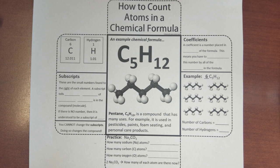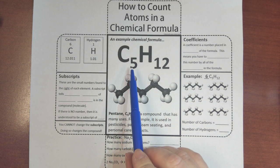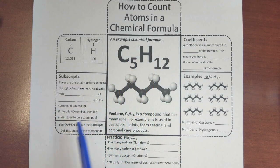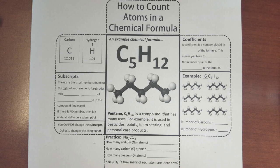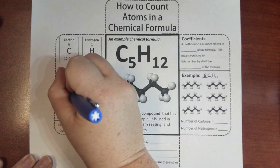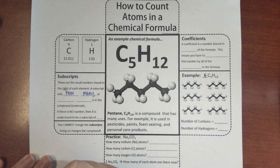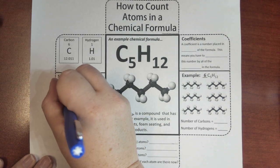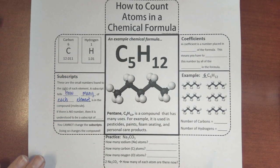The prefix 'sub' means below — like a subway is an underground train. You can see how these numbers are a little bit below the normal line next to the C and H. That is called a subscript — these are the small numbers found to the right of each element. A subscript tells how many of each element is in the compound.